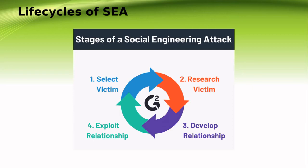Once the third part is done, the final one is exploit. The next phase is exploiting the relationship. When a target appears to trust an attacker, the attacker exploits that trust to elicit information from the target. This can take the form of a request for information, a request for a specified action from the victim, or alternatively to manipulate the victim into asking the attacker to help. This phase is where the previously established relationship is abused to obtain the desired information or actions.